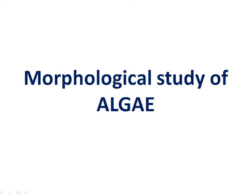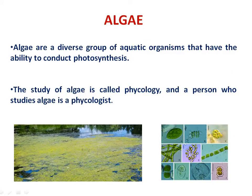Hello students, today we will study the morphological structure of algae. Algae are a diverse group of aquatic organisms that have the ability to conduct photosynthesis. Algae are chlorophyll-bearing lower plants which possess markedly different patterns of unicellular to multicellular organization. They may be either prokaryotic or eukaryotic. The study of algae is known as phycology, and phycologists are those who study algae.